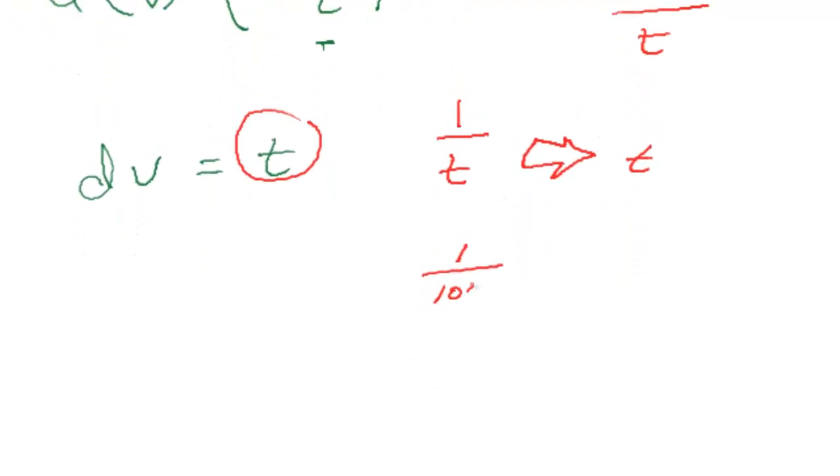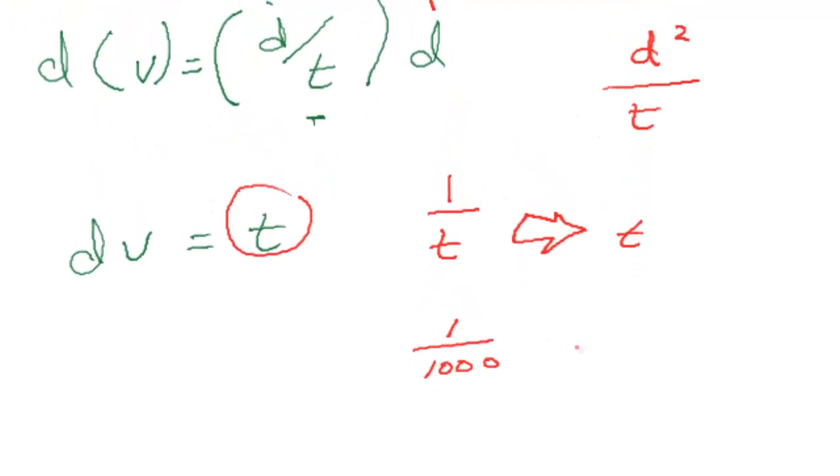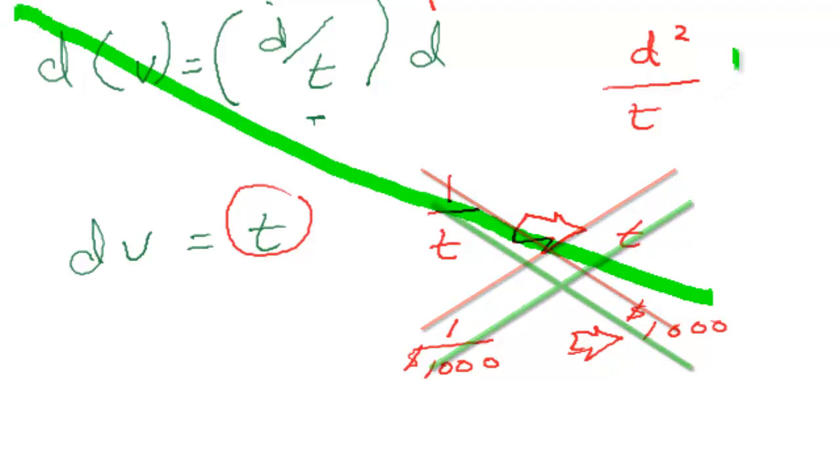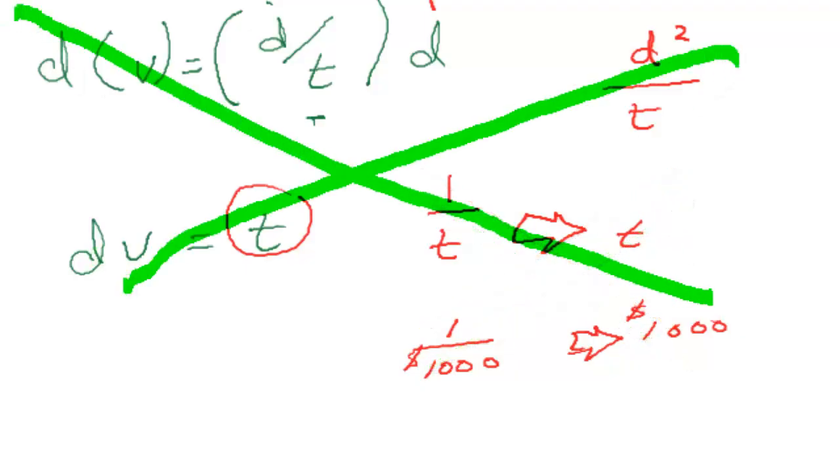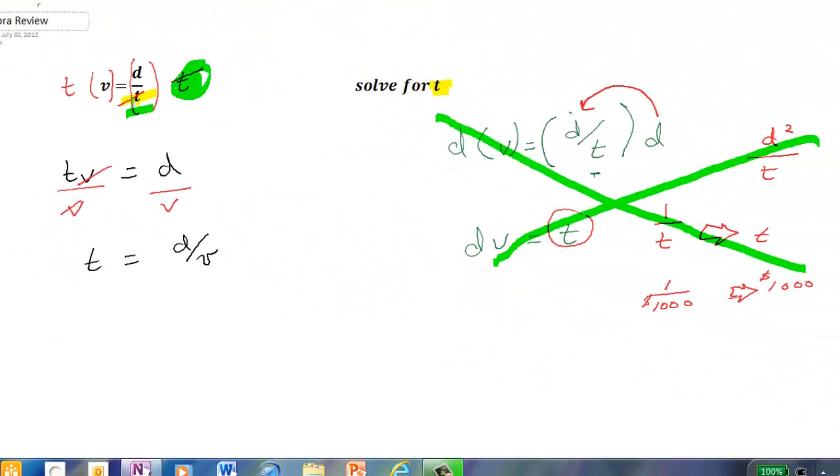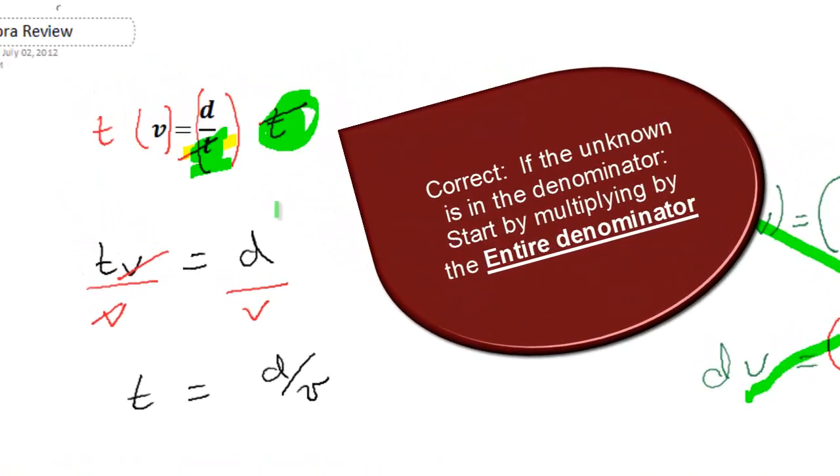One one-thousandth of a dollar bill does not magically become $1,000. It does not work that way. You cannot magically make the T revert itself. So there's two things wrong with this. But overall, the big thing is it's just the wrong way to proceed. When you have the unknown in the denominator, the first thing you do is multiply both sides by that entire denominator. Get it out of there.